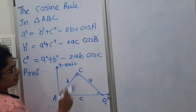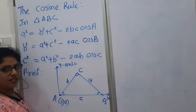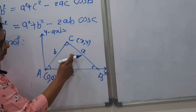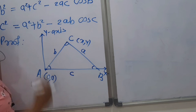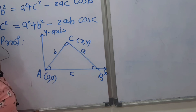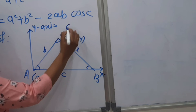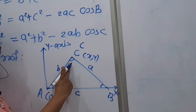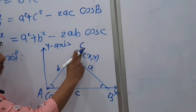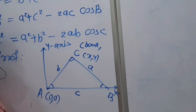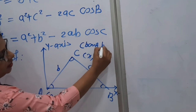Now we will consider the polar coordinates of point C. Generally we take x and y, where this distance is y and this distance is x. But here for this proof we want the polar coordinates of C. We have seen the relation between polar coordinates and Cartesian coordinates. Here the angle is A and the distance is B, therefore the polar coordinates of C are: x equals B cos A, and y equals B sin A.